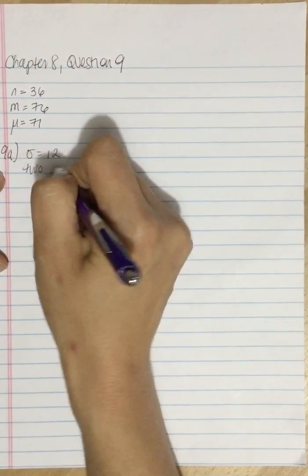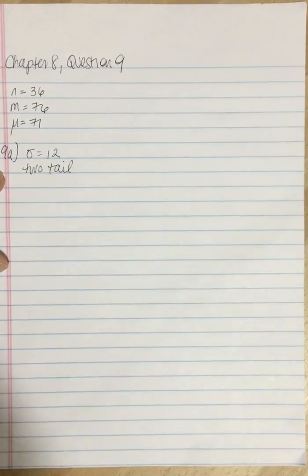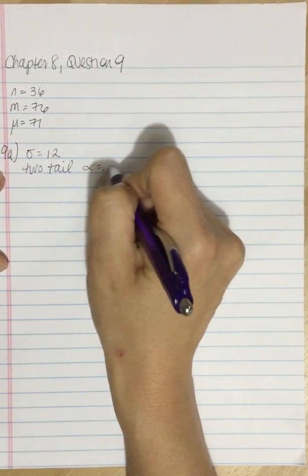Use a two-tailed test with an alpha of 0.05.